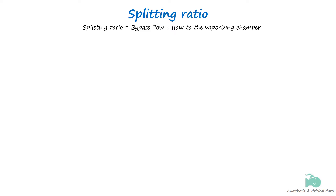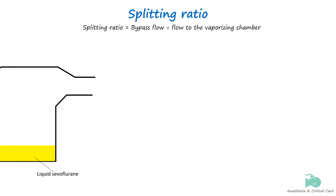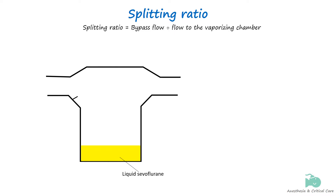Let's begin with this simple vaporizer containing sevoflurane to understand how splitting the fresh gas changes the percentage of delivered anesthetic. The saturated vapor pressure of sevoflurane is 157 mmHg at 20 degrees Celsius.